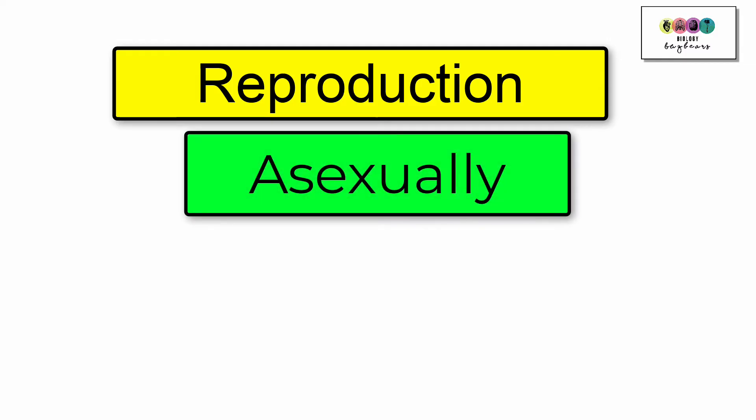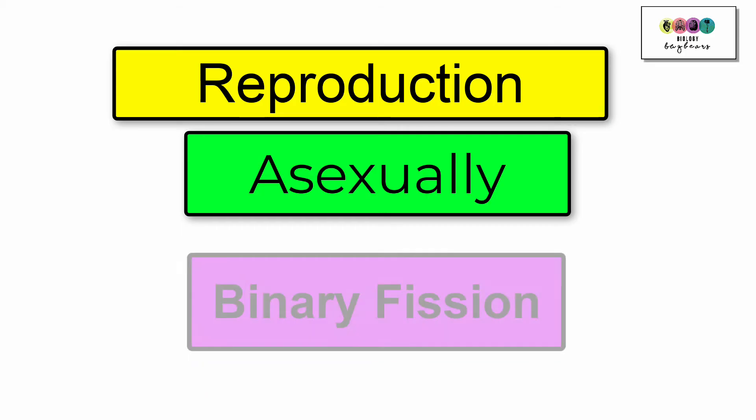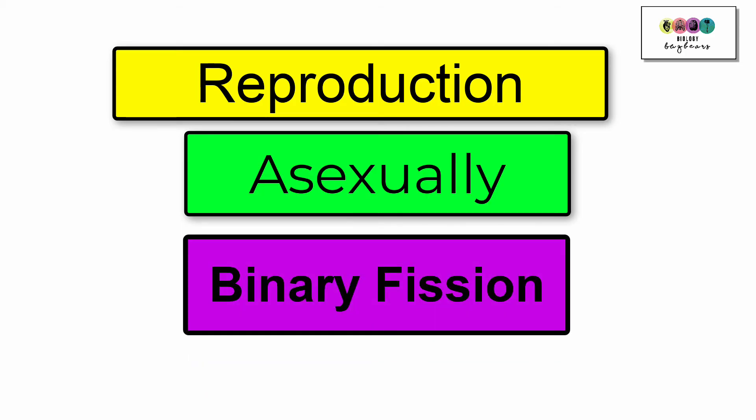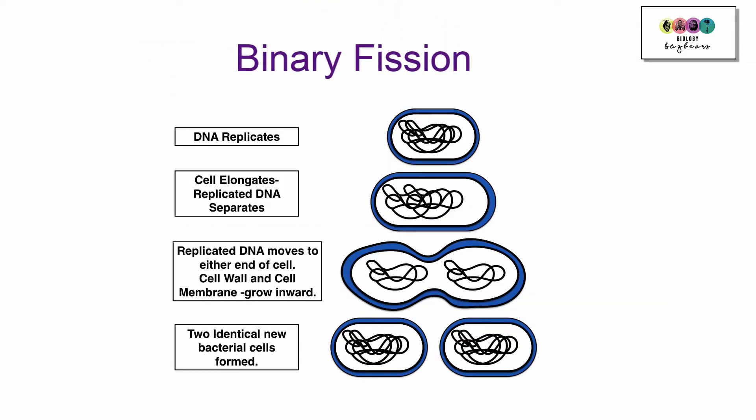Reproduction. Bacteria reproduce asexually. This means that there's only one parent and no gametes involved and it results in the production of genetic clones. The method of reproduction is known as binary fission and this is really important that you remember it will come up on an exam. So what does binary fission entail? Well first of all the DNA is replicated so the bacterial chromosome, there is another copy produced and the cell elongates. It gets longer so the replicated DNA or the bacterial chromosomes move to either end of this brand new longer cell and gradually the cell wall and cell membrane will grow inwards, eventually nipping off to form two identical bacterial cells.